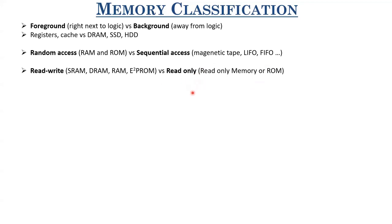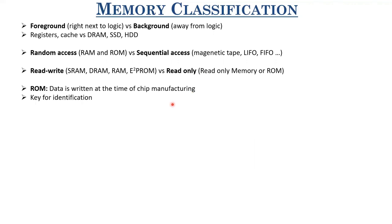In traditional ROMs, data is written at the time of chip design or manufacturing, and nowadays they typically only store keys for identification or boot-time information. People realized the need for programming capability, so they developed PROM (programmable ROM) first. Then came EPROM (erasable programmable ROM), which used UV rays to erase data — a complicated process. This led to E2PROM, or electrically erasable programmable ROM, where data is erased electrically.